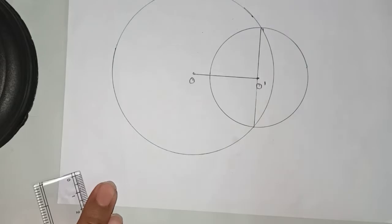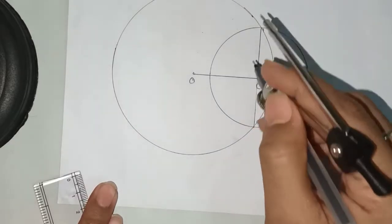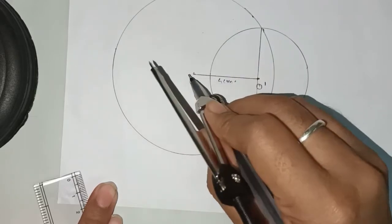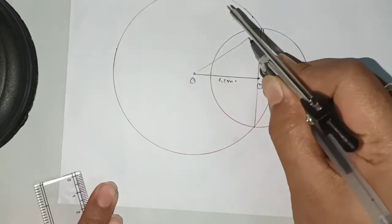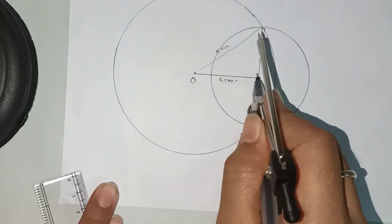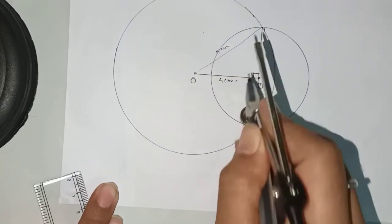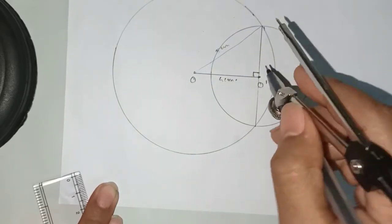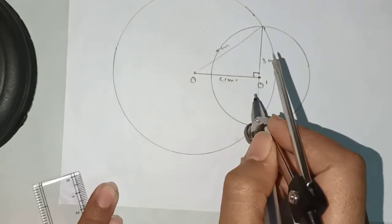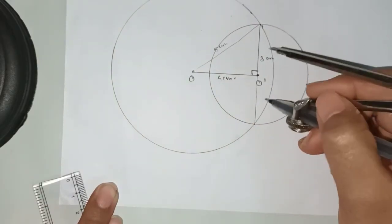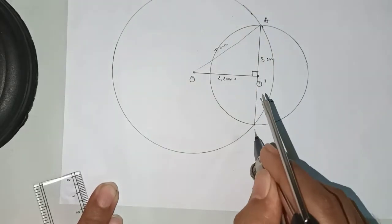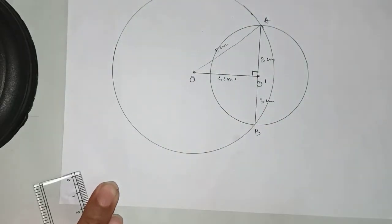Or we need to go with algebraically. You can find here this is your 4 centimeter distance, this is your 5 centimeter distance, and clearly from the figure we can see that it is 90 degrees. So by Pythagorean theorem we are getting 3 centimeters. And perpendicular drawn to the chord bisects the chord, so 3 centimeters and this also gives you 3 centimeters. The total length of this common chord will be 6 centimeters.